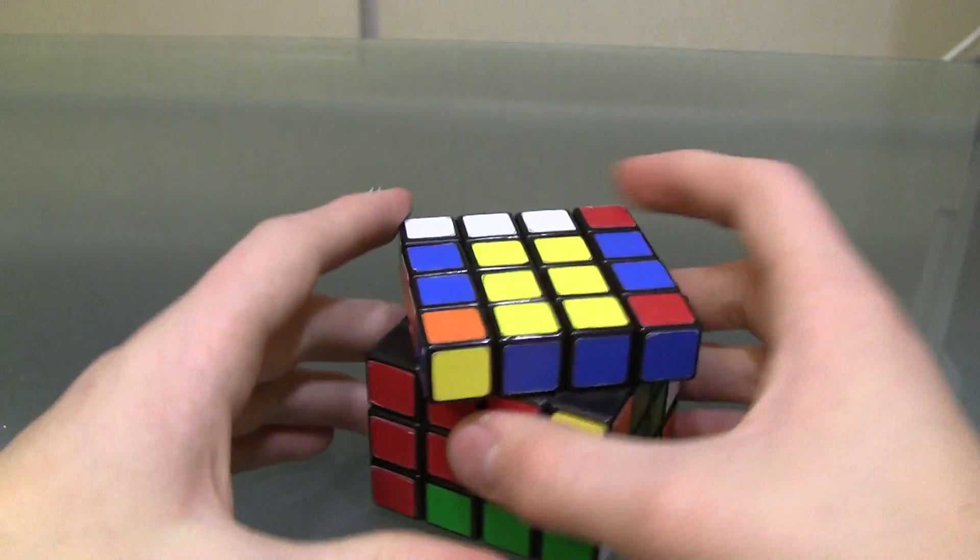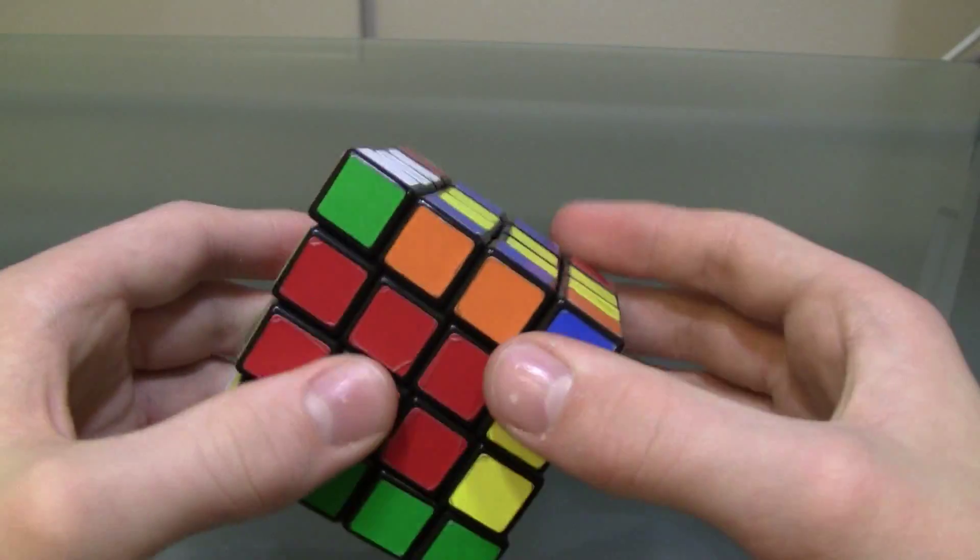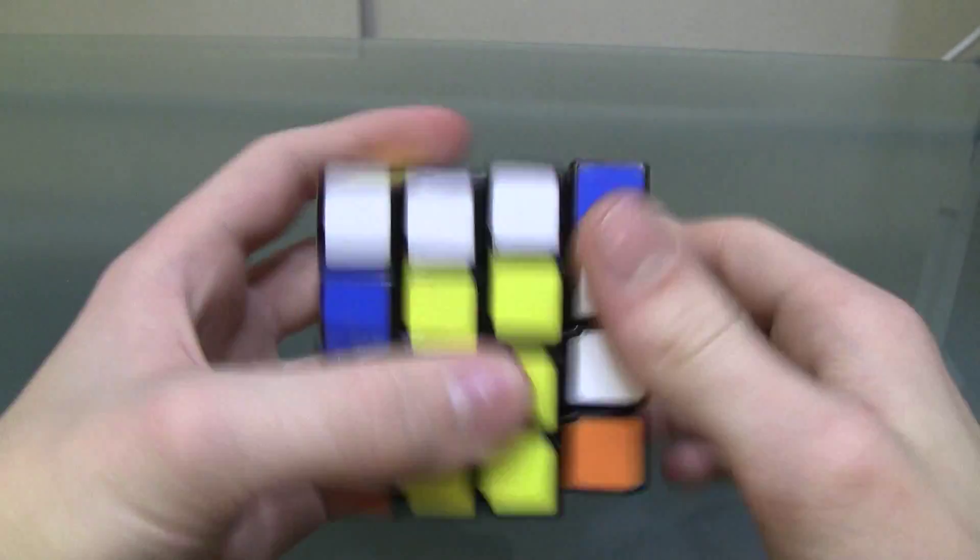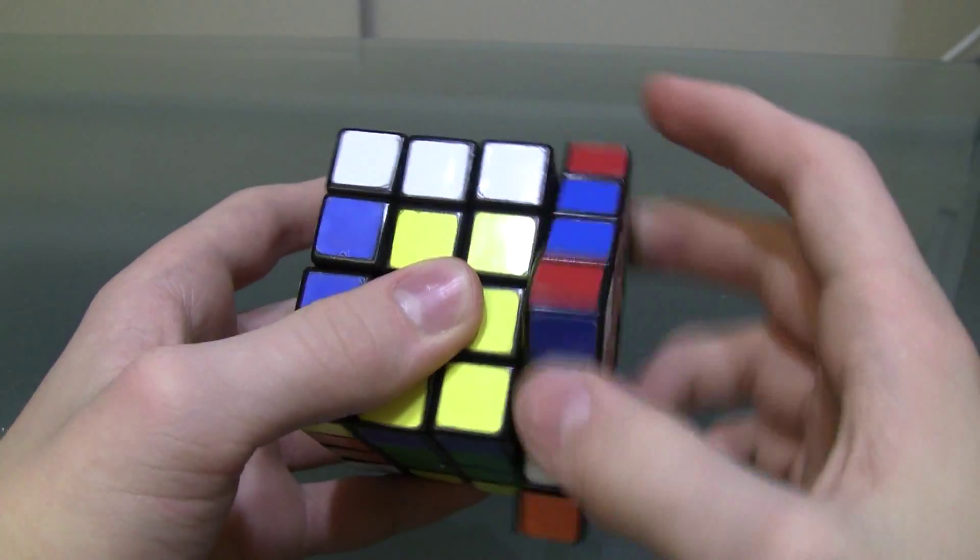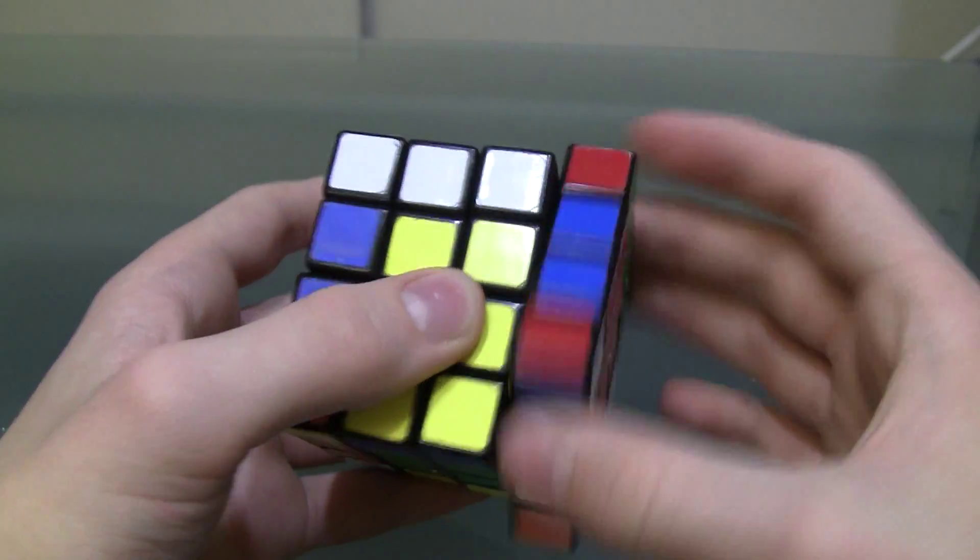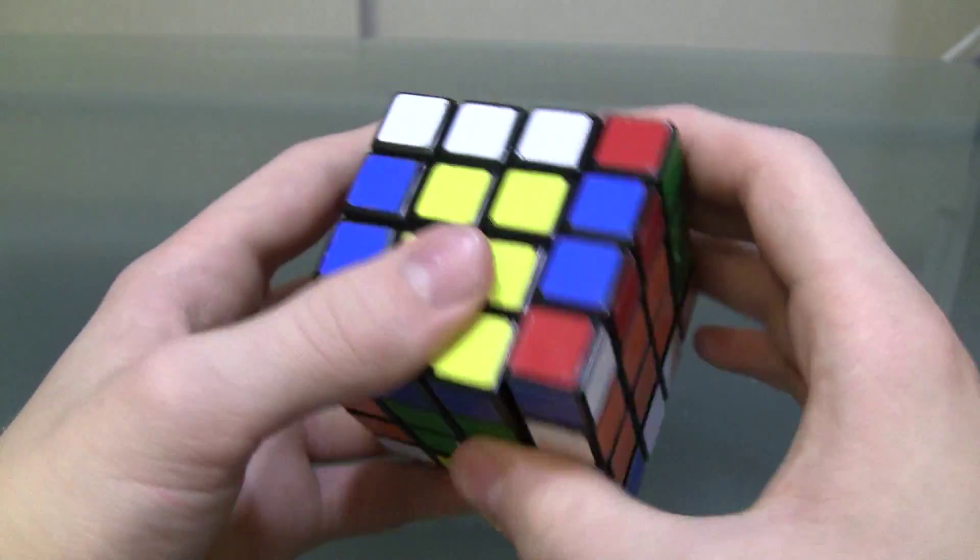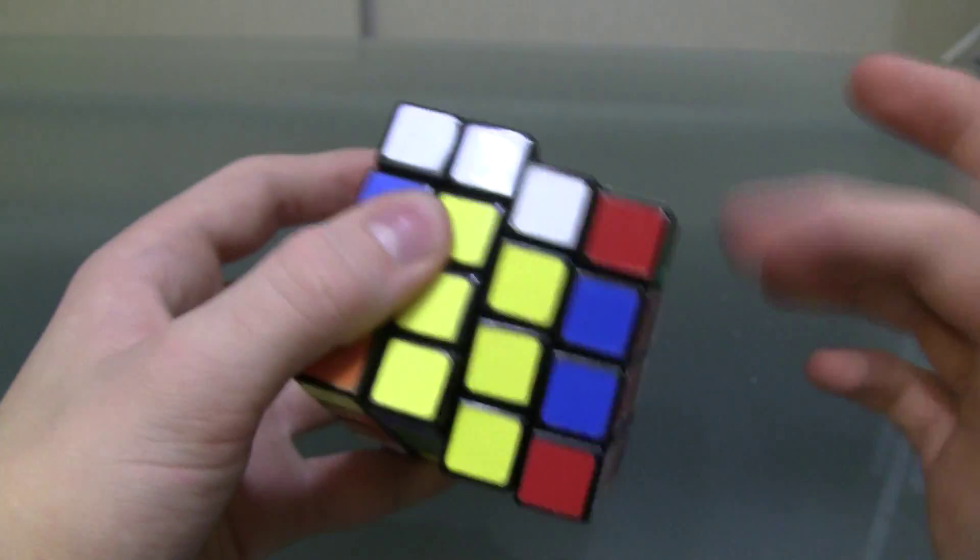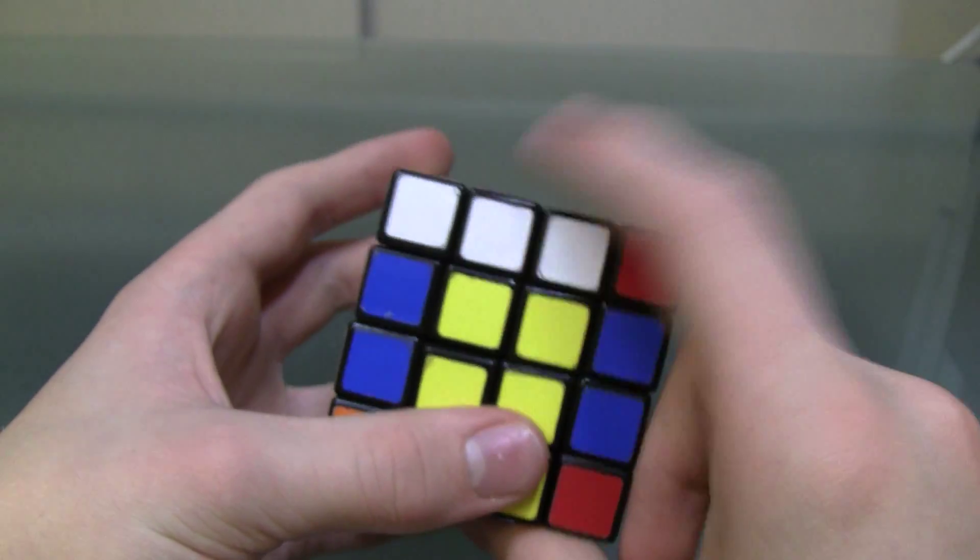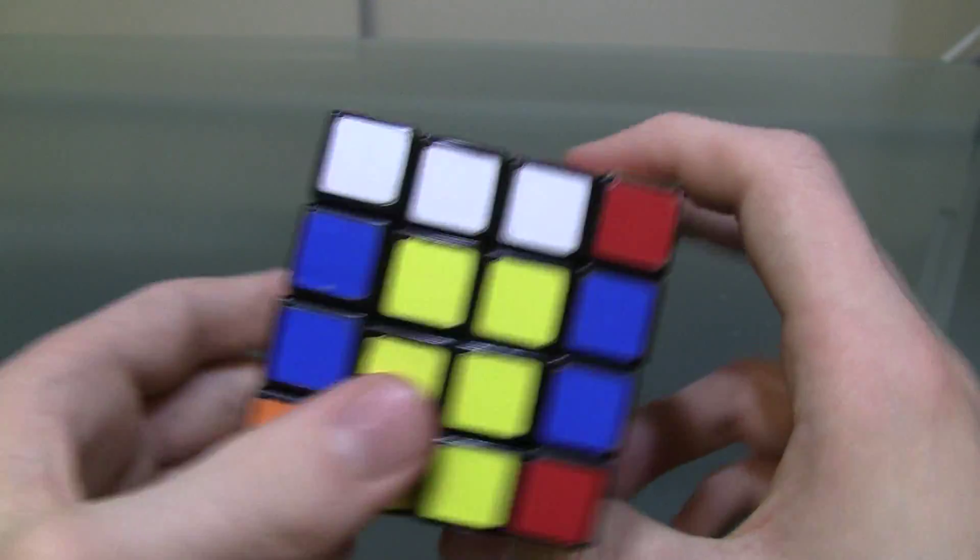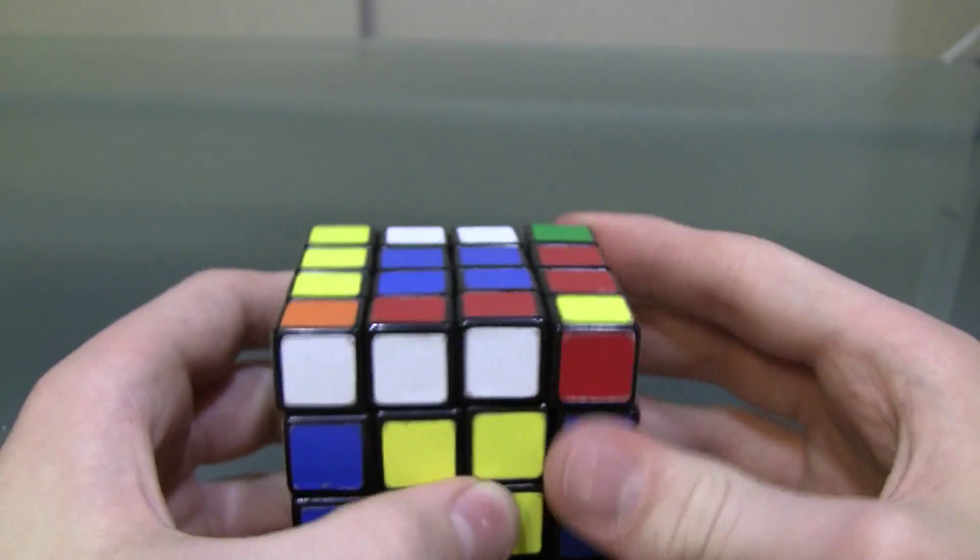So now we can solve this cube as a 3x3. And we're going to do that by only turning the outer layers. When you're solving a big cube as a 3x3, you want to make sure to only turn the outer layers. And that's because if you turn an inner layer like this, it's going to mess up your centers and your edge pairs. So you only want to make inner layer turns if it's specified in an algorithm when solving a 3x3.